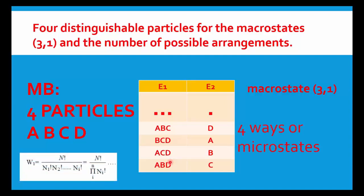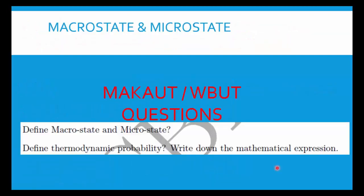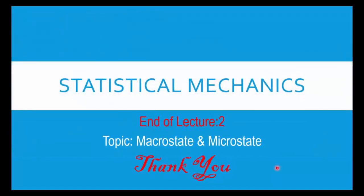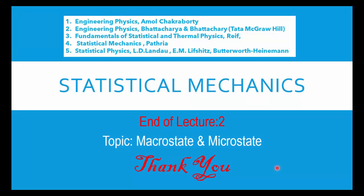To verify using the formula: W = N! / (N1! × N2!) = 4! / (3! × 1!) = 24 / 6 = 4, which confirms four microstates. So we have covered macrostate, microstate, and thermodynamic probability in this lecture. Typical theory questions ask you to define macrostate, microstate, and thermodynamic probability. Thank you for your attention.